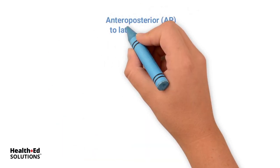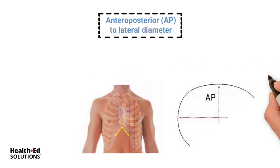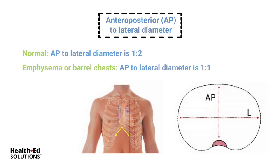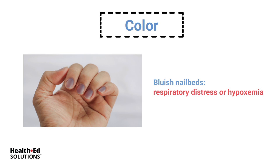AP to lateral diameter — AP is anterior to posterior. Normally your AP to lateral diameter is one to two, but in a certain type of patient, your chest diameter is one to one. Those are emphysema patients, or our patients with what we call barrel chests. Color is also important — do they have a good color, or are their nail beds kind of bluish? Those are signs of respiratory distress and hypoxemia.